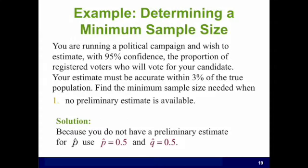Example: Determining the minimum sample size. You are running a political campaign and wish to estimate with 95% confidence the proportion of registered voters who will vote for your candidate. Your estimate must be accurate within 3% of the true population proportion. Find the minimum sample size needed when no preliminary estimate is available.